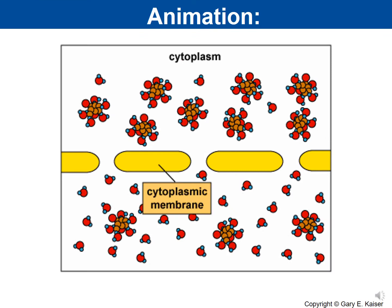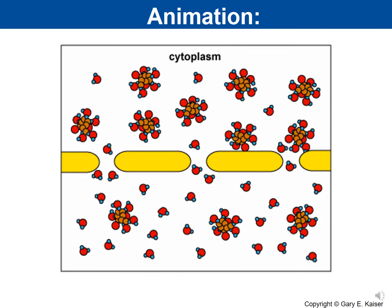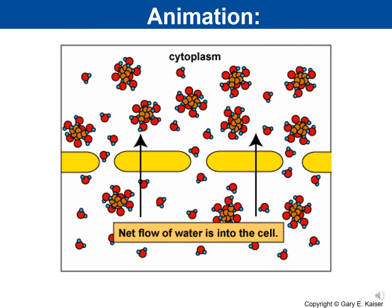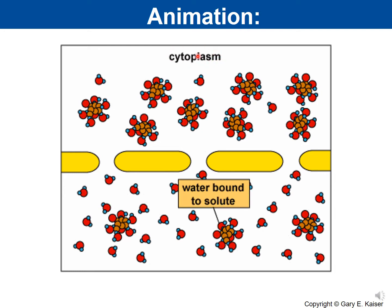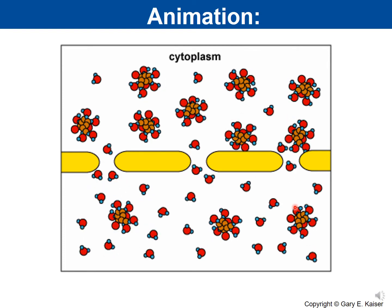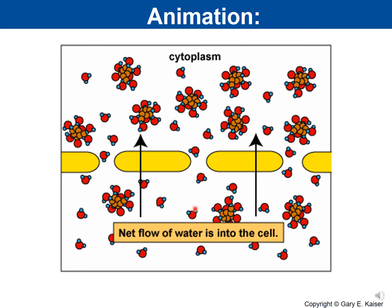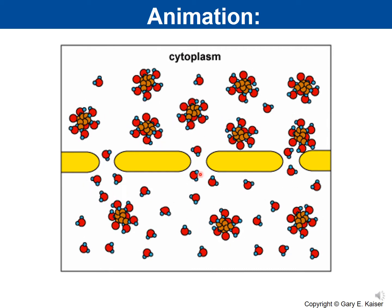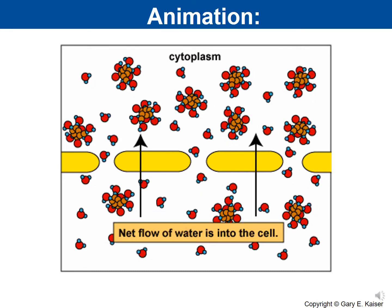This animation shows osmosis across a cell membrane. The orange molecules represent the solute inside the cytoplasm. Since there is more solute inside the cell, there is more free water outside. That free water crosses the membrane and diffuses into the cytoplasm, resulting in net movement of water into the cell.